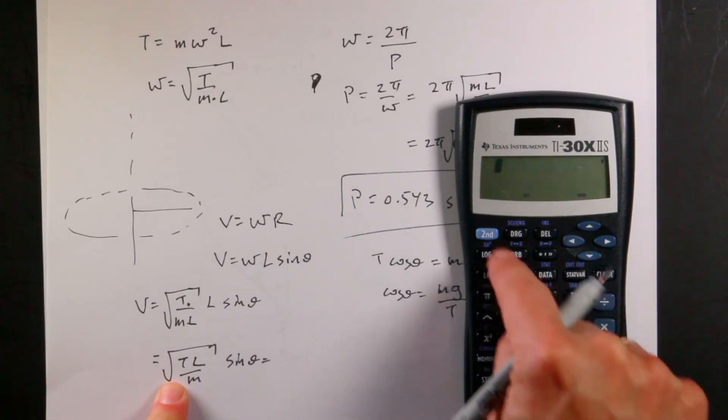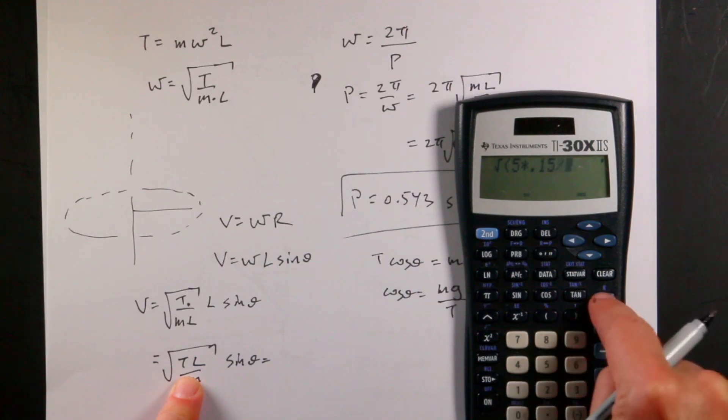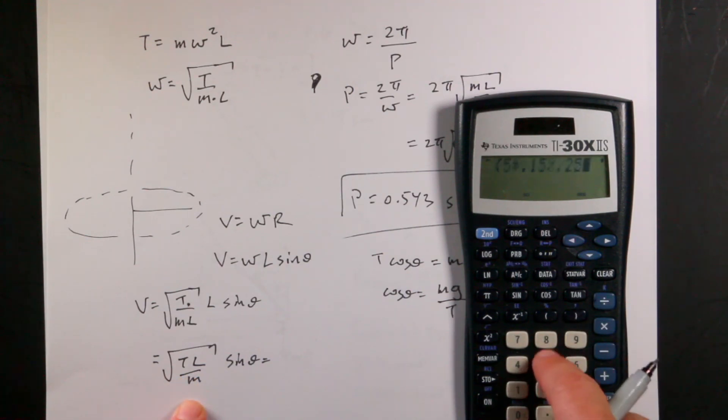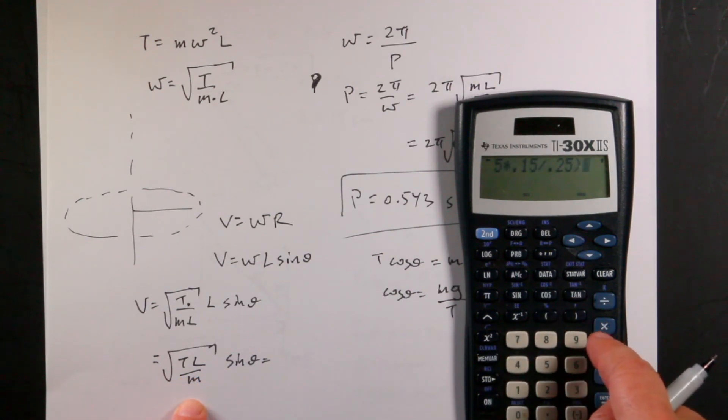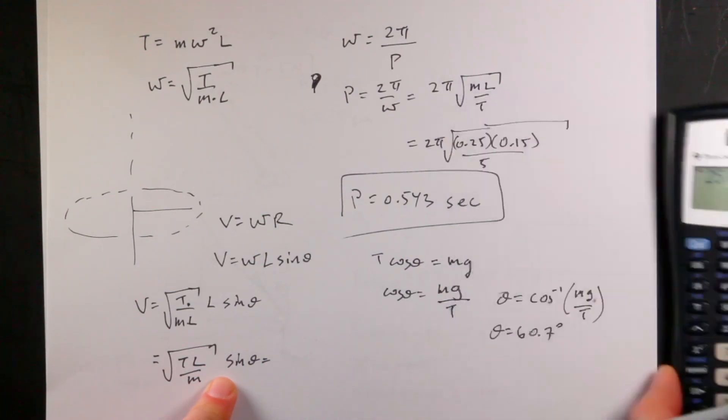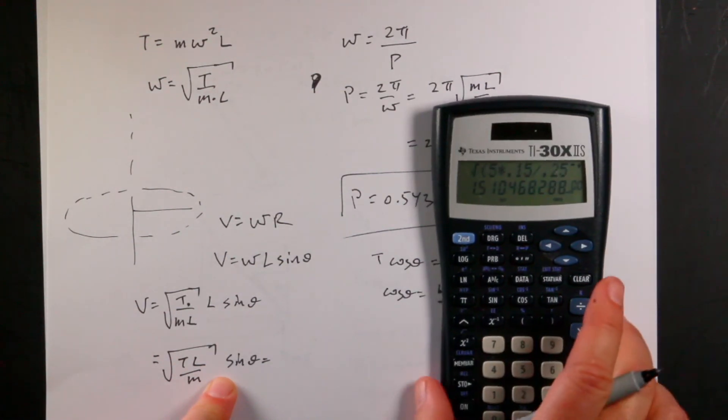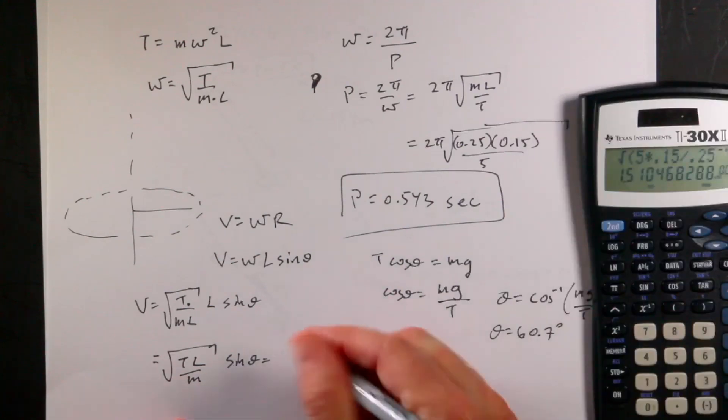The square root. No, I don't want to do that. Clear, clear, clear. Square root of t, which is 5, times the length, 0.15, divided by the mass, 0.25, close parentheses, times sine of 60.7. And I get 1.5 meters per second. 1.51. There. Done.